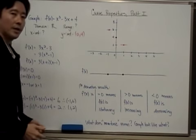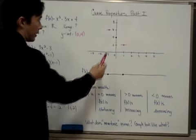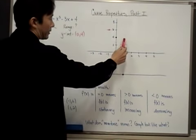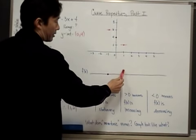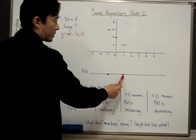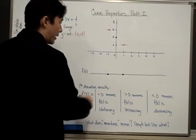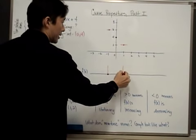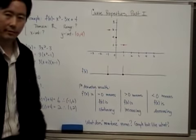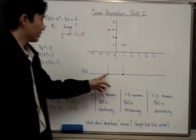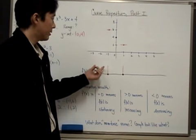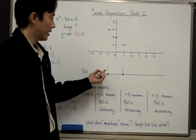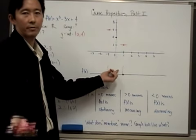So now, how does this help us? Well, we know that the first derivative is zero at (-1, 6), and the first derivative is also zero at (1, 2). Everywhere else, it is either going to be positive or negative. And since these are the only two places where it's equal to zero, each interval has to be either all positive or all negative.